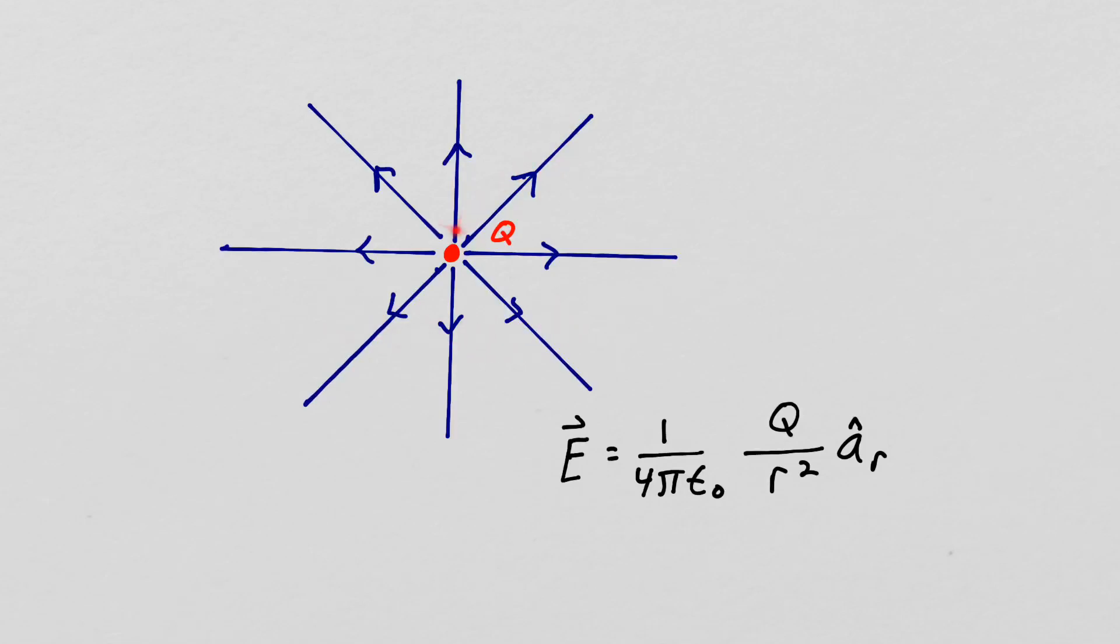The electric field intensity lines come out in the radial direction and the density gets less as you get further away because of the fall off due to the one over r squared dependence.